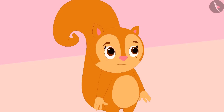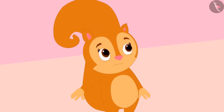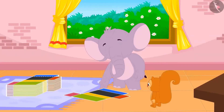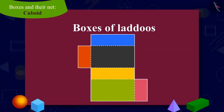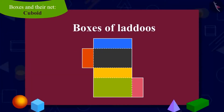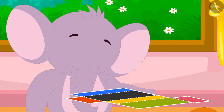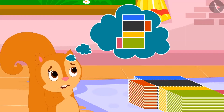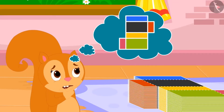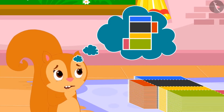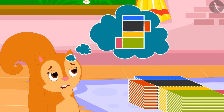Chanda told Appu that she could not see any empty boxes in the other room. Now Appu went with her to the other room. He showed Chanda the cardboard cutouts and said, here are the empty boxes of laddus. Chanda was puzzled. She could not understand why Appu was calling those cardboard cutouts as empty boxes.